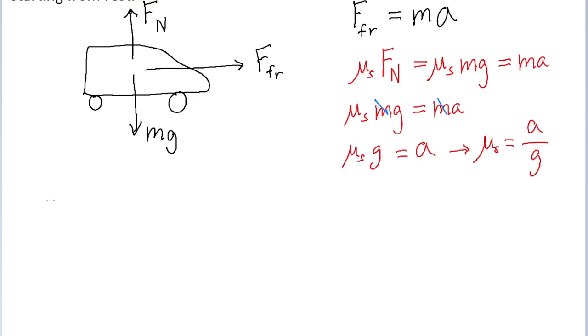Now because the information we're looking for is acceleration, and the information we've been given is distance and time, we can use the displacement kinematics equation to find this acceleration. The displacement equation says that the displacement is equal to initial speed multiplied by time plus one half of the acceleration multiplied by the time squared.